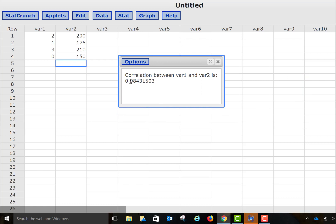that it tells us the correlation is 0.98431503, which matches the value that we got when we did the computation by hand.